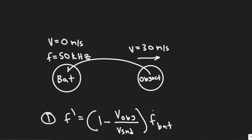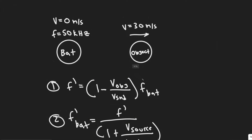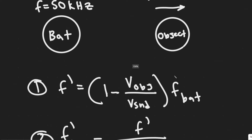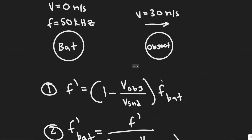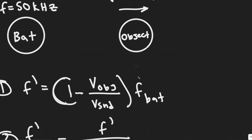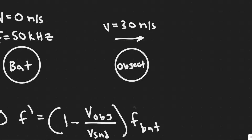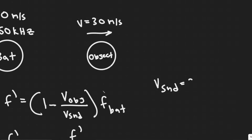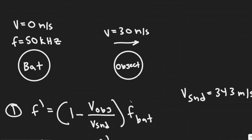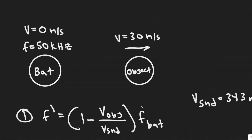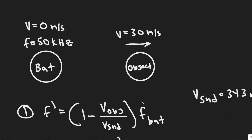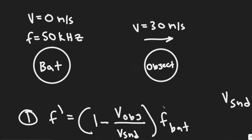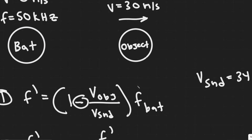We're going to use two formulas in sequential order. First, f' is the frequency interpreted by the object. The formula we use is f' = (1 - v_object / v_sound) × f_bat, where the velocity of the object is 30 meters per second and the velocity of sound is 343 meters per second. You use this formula to find the frequency the object receives when the bat is not moving. The minus sign indicates we're moving away from the object.